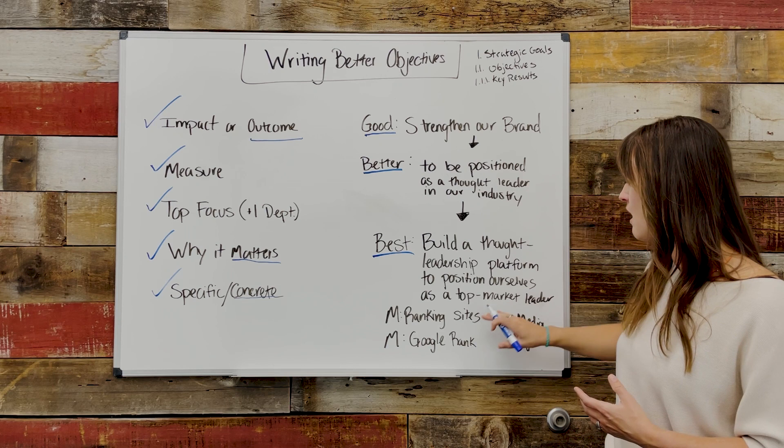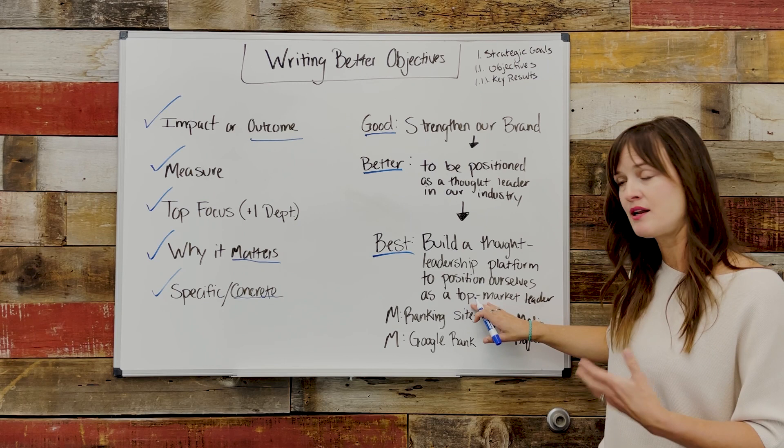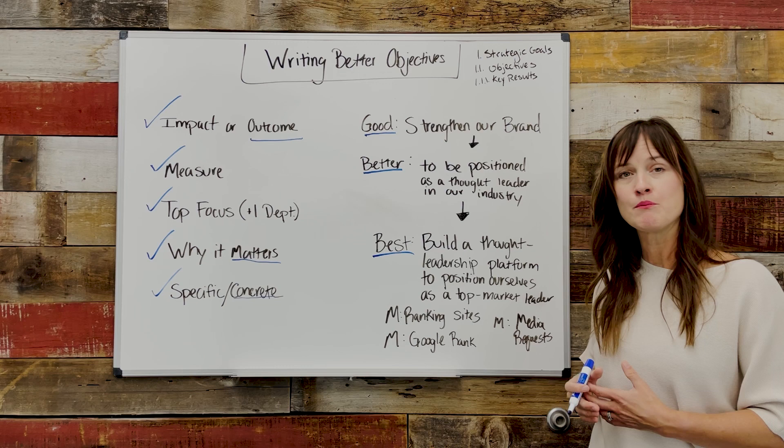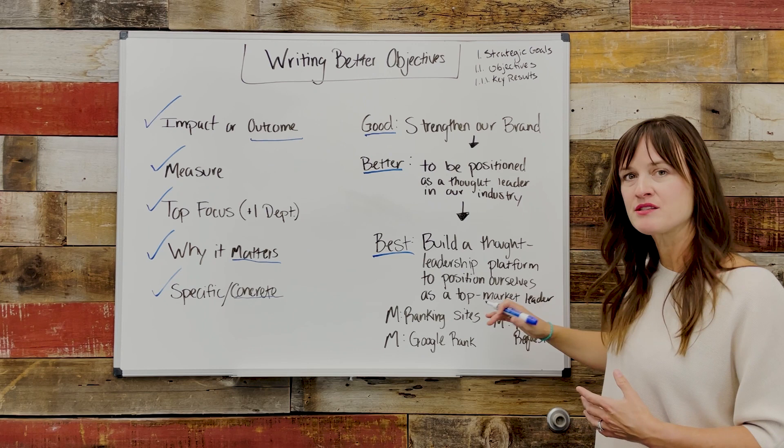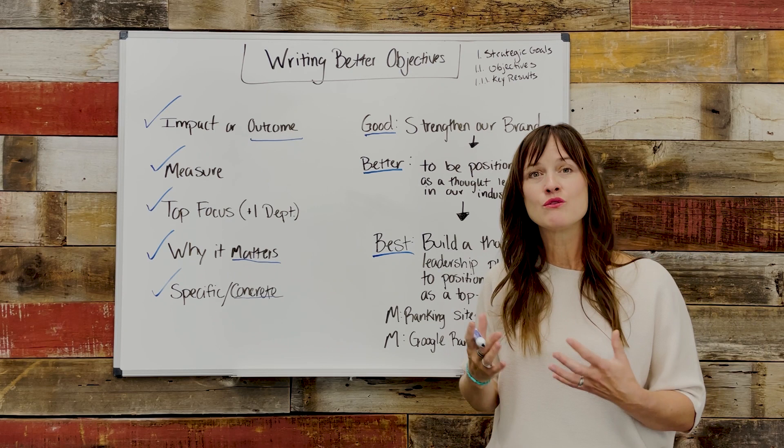The reason that this is better is we're saying 'top market leader' — that's much more clear about the direction and the outcome. The why is captured in our positioning in the market, and then we talked about the measurability. So that's an example of good, better, best — really think about using these ideas to make sure that you're writing really great objectives.